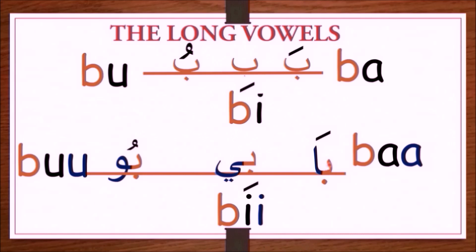When alif is added to ba, it is now pronounced as bā. So there is a difference between ba and bā, and the two should never be mixed up. For bi, when ya without a vowel is added, it becomes bī. And bu becomes bū when waw without a vowel is added to it.